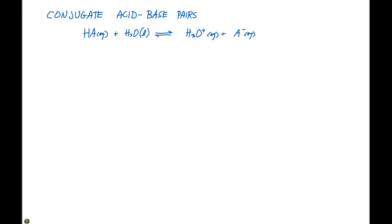So I have written here a generic equilibrium expression describing what happens when we put an acid in water. Our acid is going to be HA, which is our proton donor. Our base is going to be water, which is our electron pair acceptor.